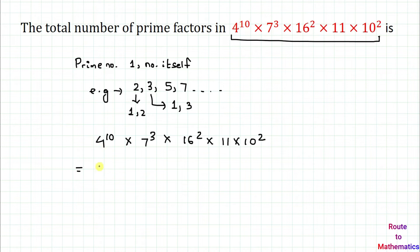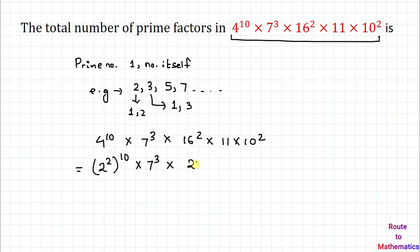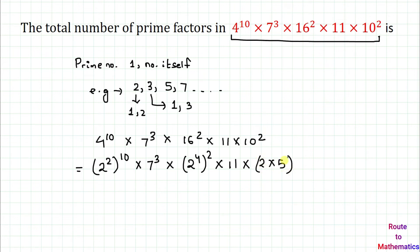Since 4 is a factor of 2, we can write it as 2 to the power 2, whole to the power 10. 7 is itself a prime number so we don't need to convert it. 16 is 2 to the power 4, whole to the power 2. 11 is itself a prime number so we don't need to change it. And 10 can be written as 2 into 5, whole to the power 2.